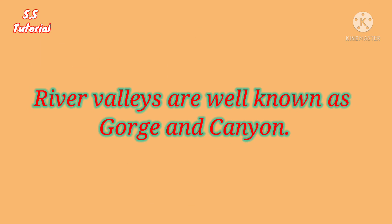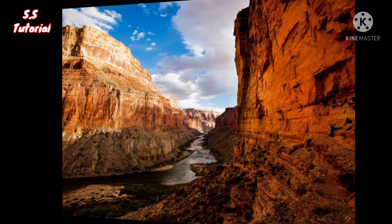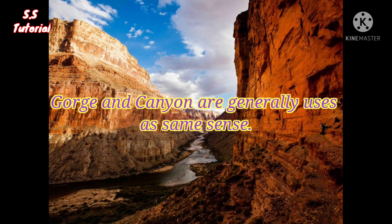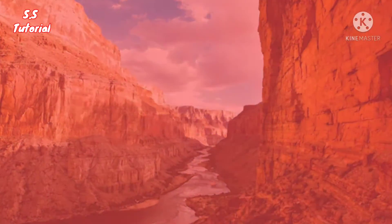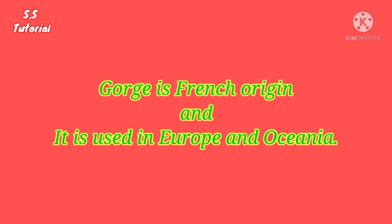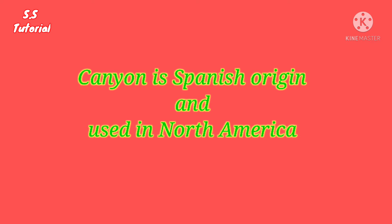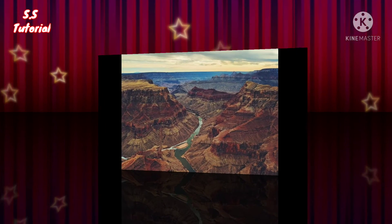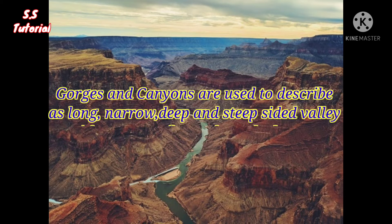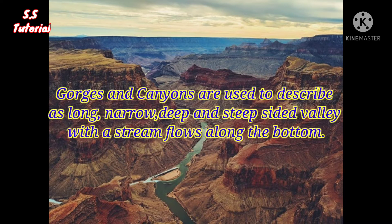River valleys are well known as Gorge and Canyon. Gorge and Canyon, these two words are used in almost the same sense. The word Gorge is of French origin and is used in Europe and Oceania, and the word Canyon is of Spanish origin and is generally used in North America. Both words are used to describe deep, narrow, long and steep-sided valleys with a stream or river flowing through the bottom.